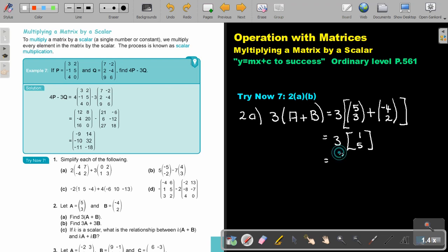Now 3 times 1 is 3, and 3 times 5 is 15. That's my final matrix.